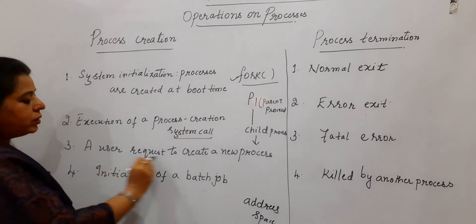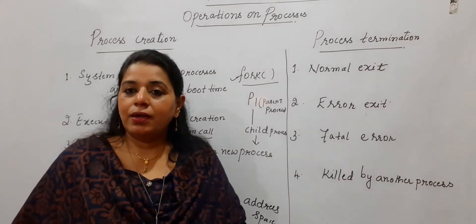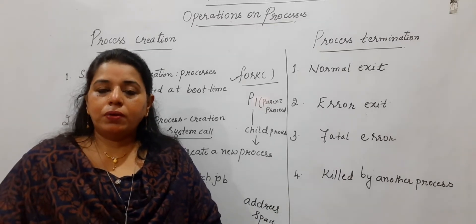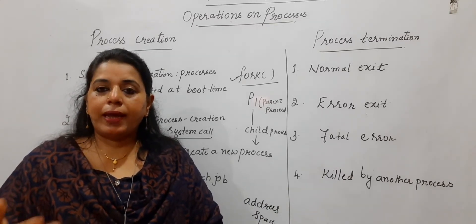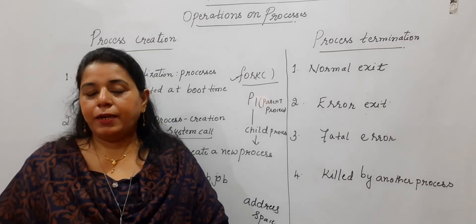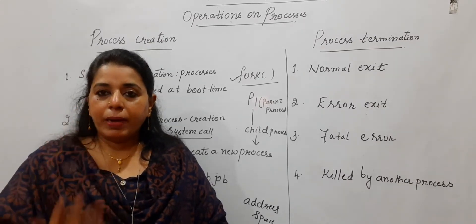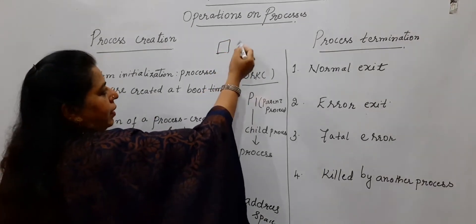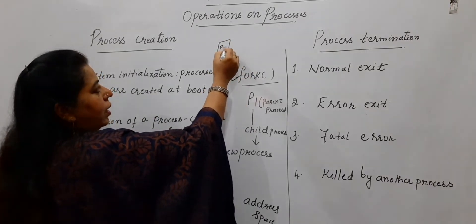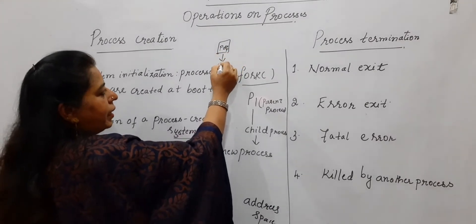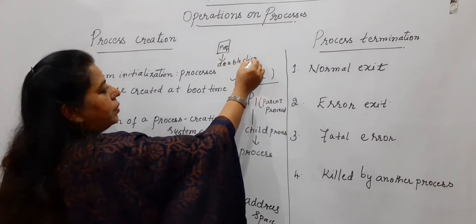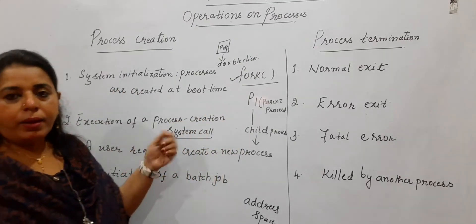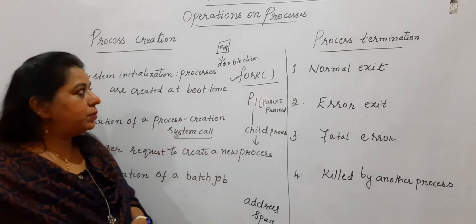A user request to create a new process is very normal. Whatever task you want to perform, you type a command and the process gets created. For example, if you double-click an icon — a Microsoft file or a PDF — you are requesting the system to create a process. This is very common and all of us carry out this type of process creation.